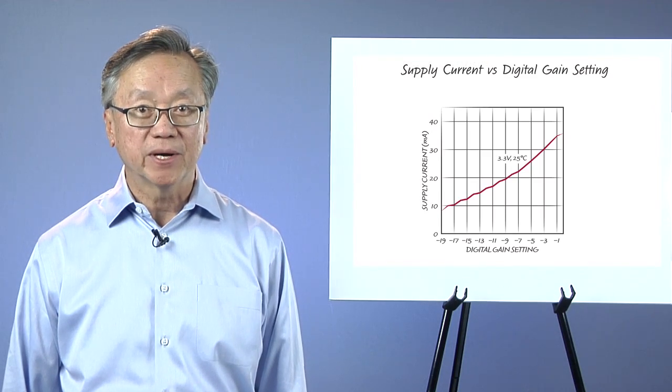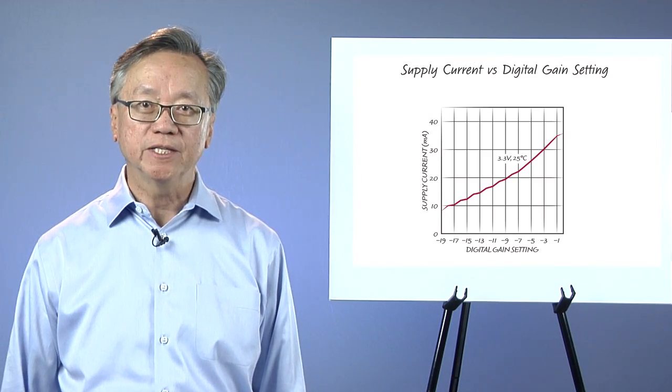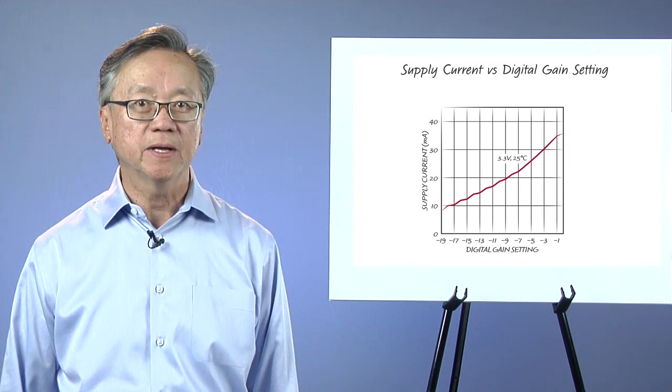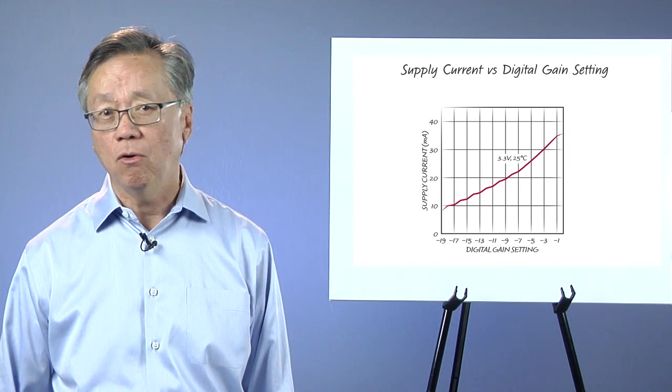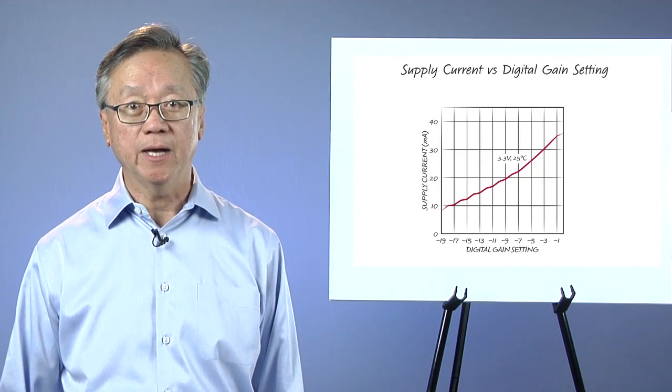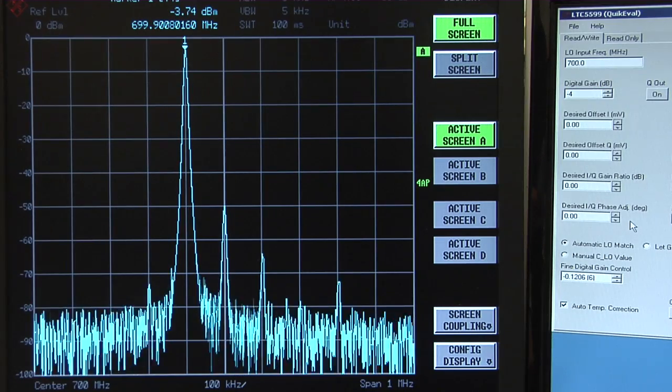Now we're ready to calibrate the sideband and carrier suppression. With direct conversion transmitters, both the undesired sideband and carrier are either in band or very close in. So suppressing them is important to minimize signal corruption.